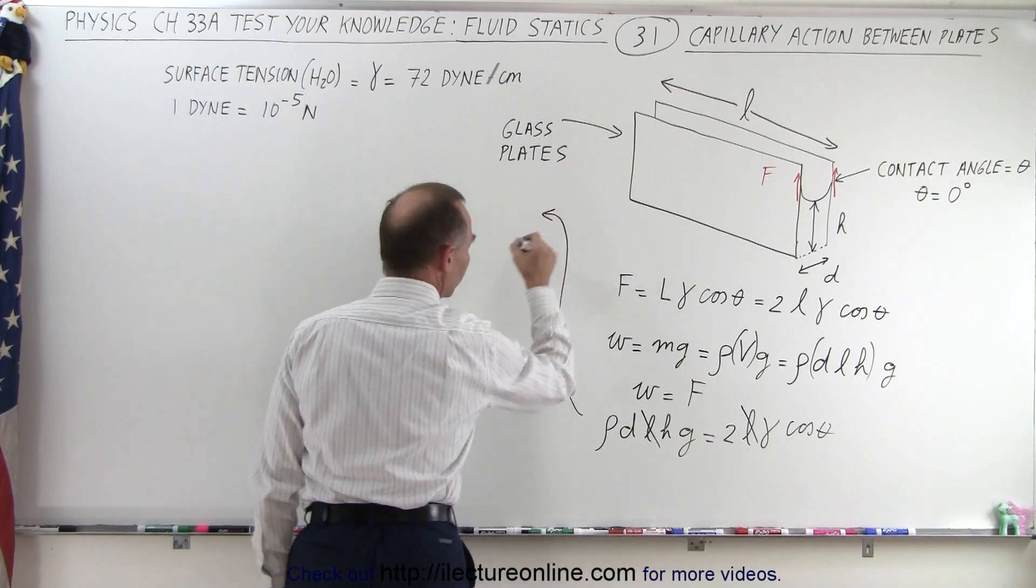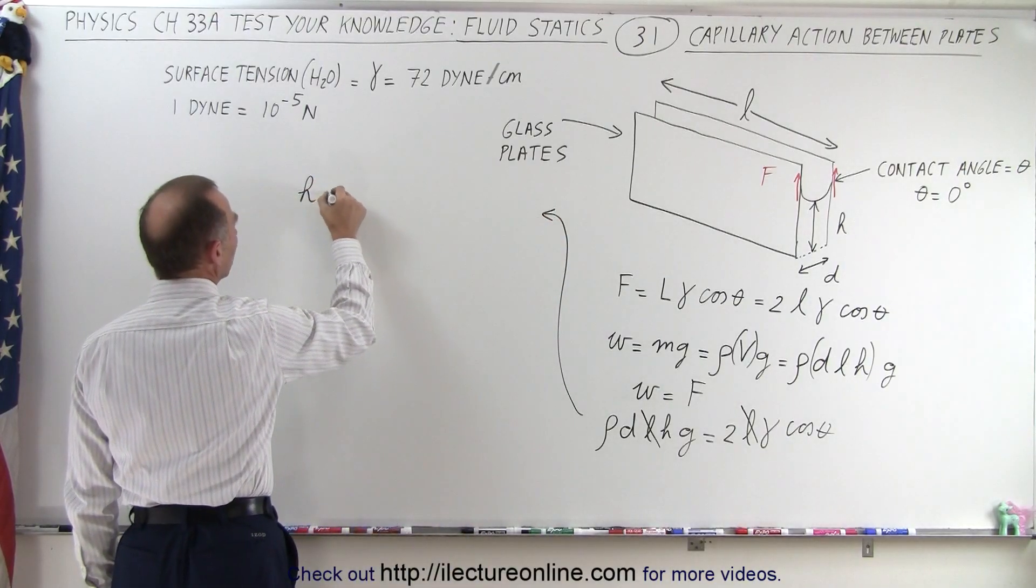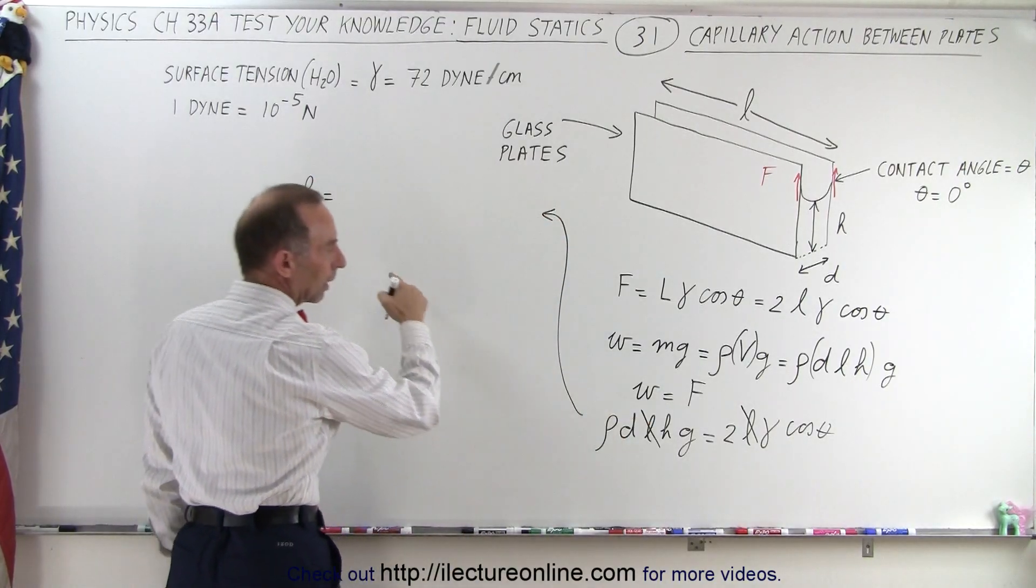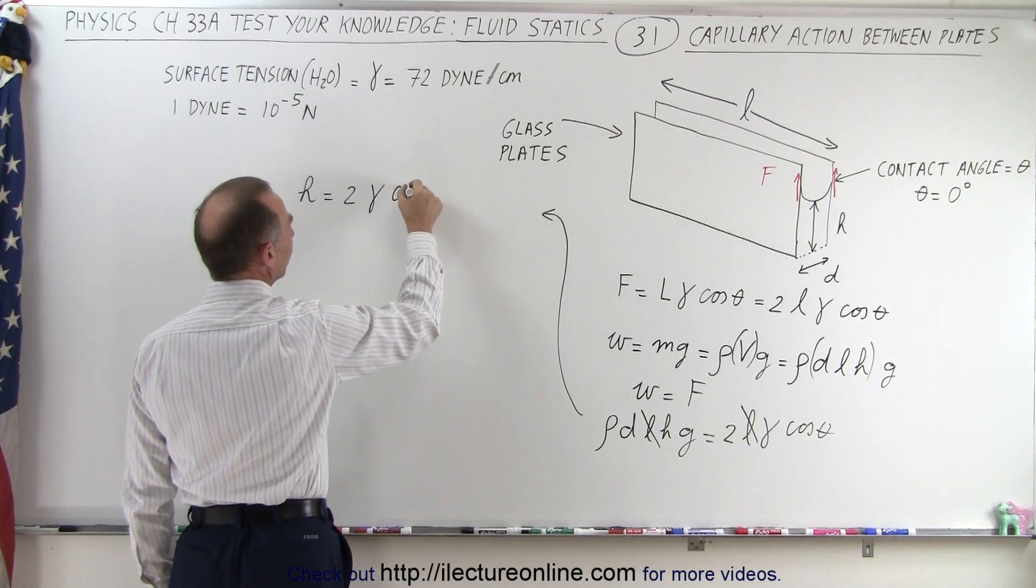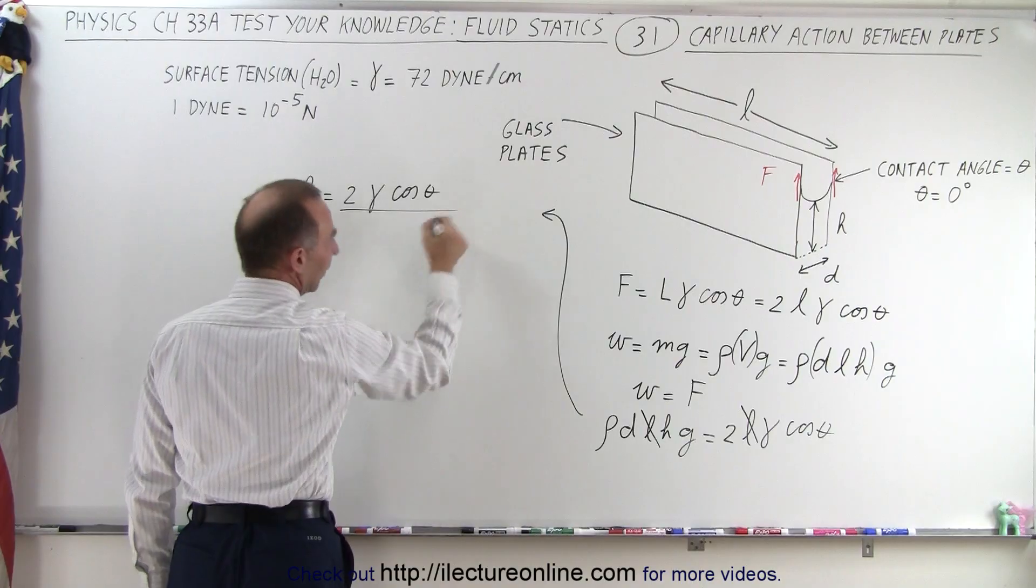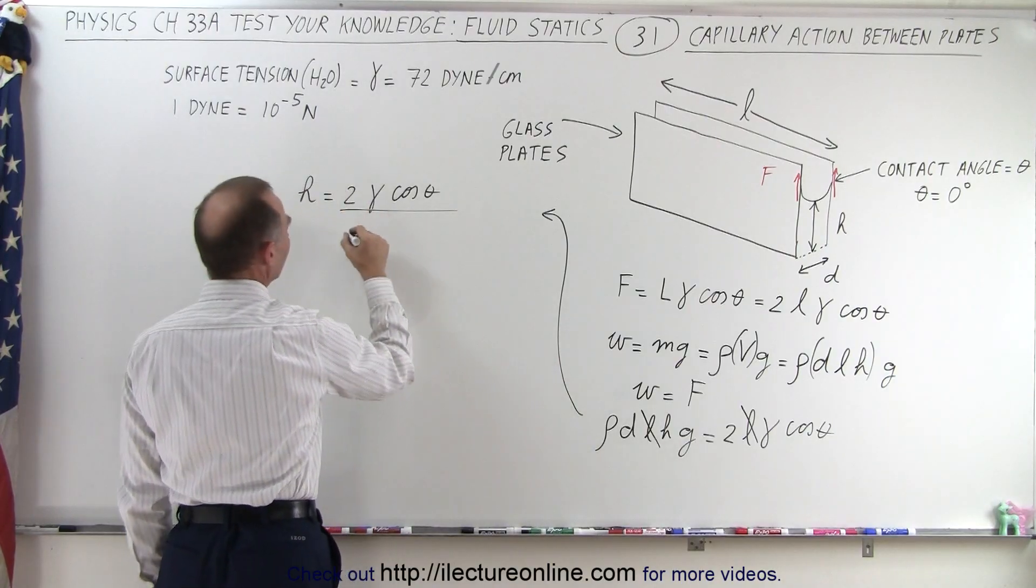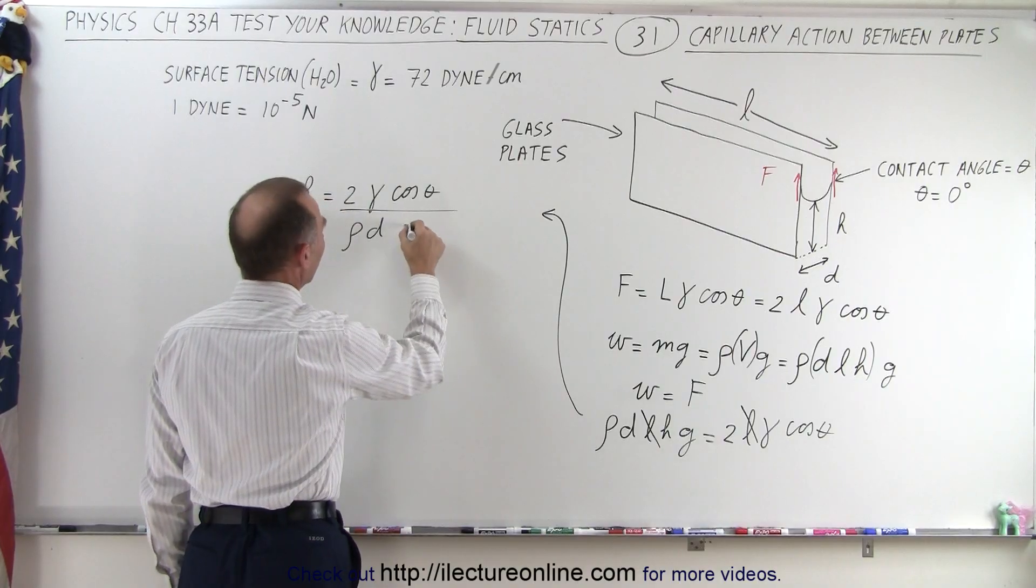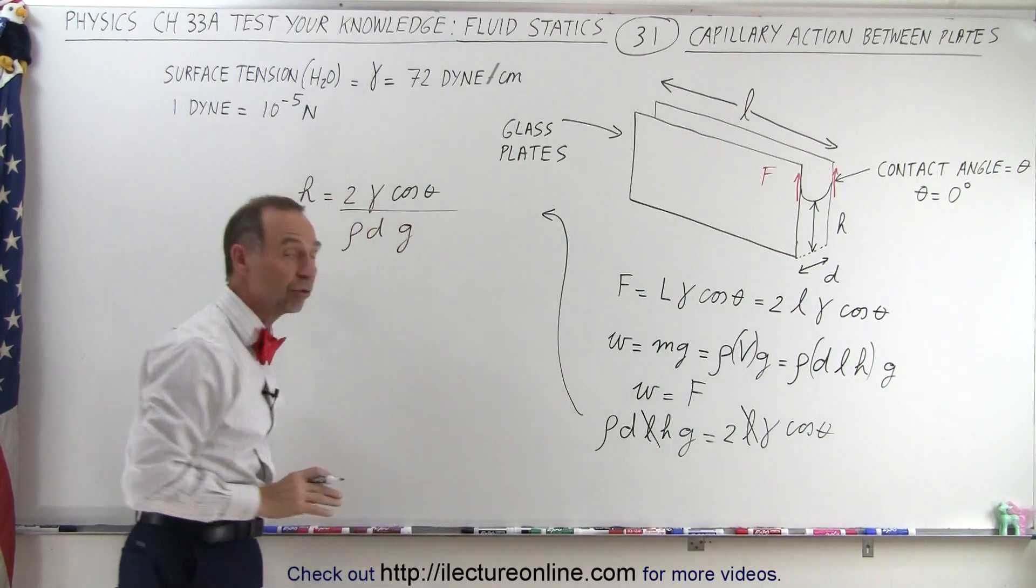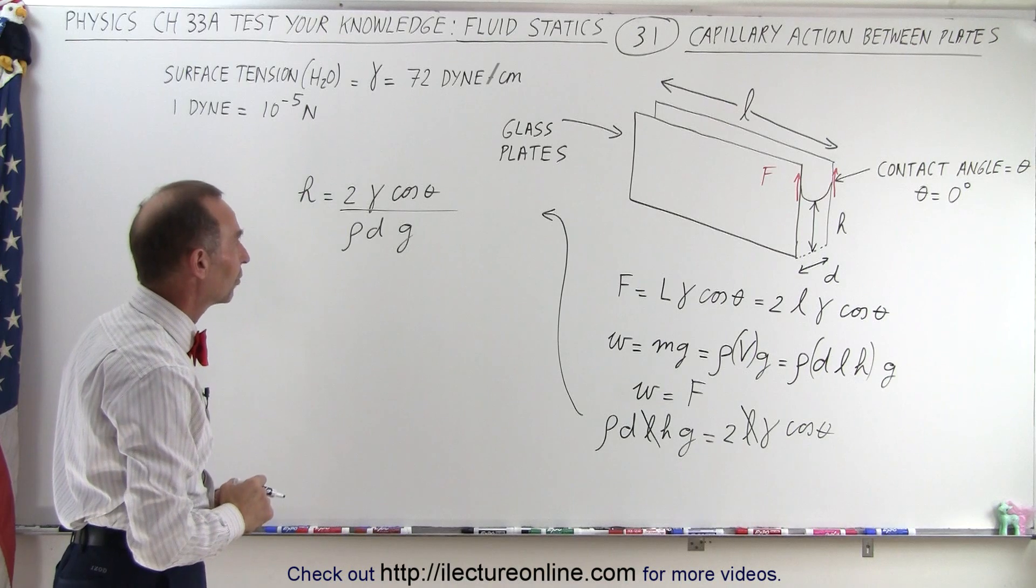And then solving that for H, we can say that H is equal to 2 times the surface tension times the cosine of the contact angle divided by what's left: the density times the distance times g. And there's the equation to find the height of the water between the plates.